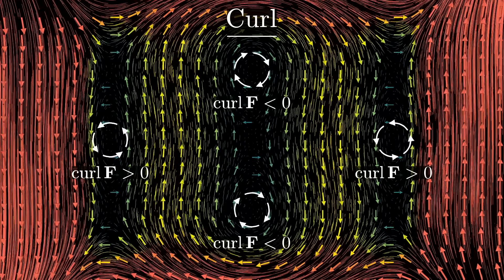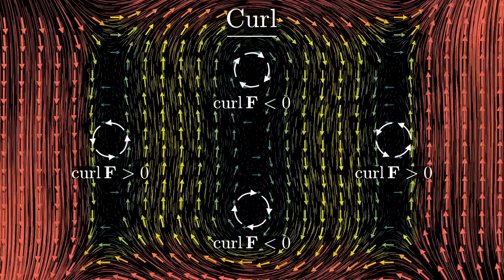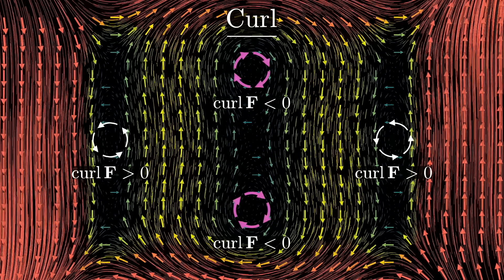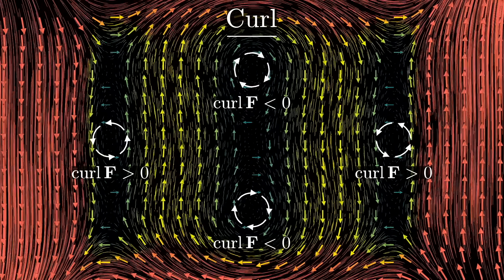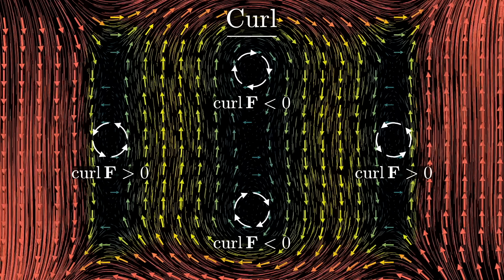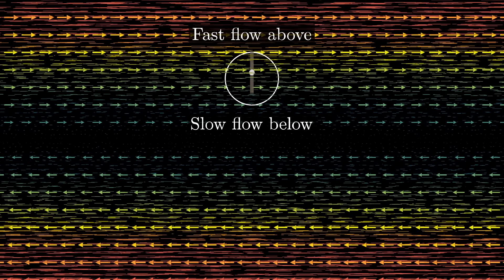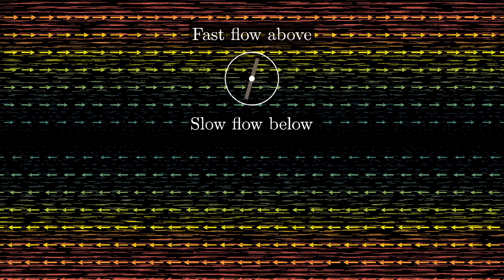Regions where that rotation is clockwise are said to have positive curl, and regions where it's counterclockwise have negative curl. And it doesn't have to be that all of the vectors around the input are pointing counterclockwise, or all of them are pointing clockwise. A point inside a region like this one, for example, would also have non-zero curl, since the flow is slow at the bottom, but quick up top, resulting in a net clockwise influence.